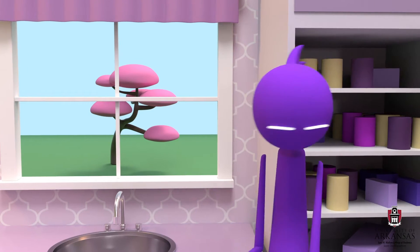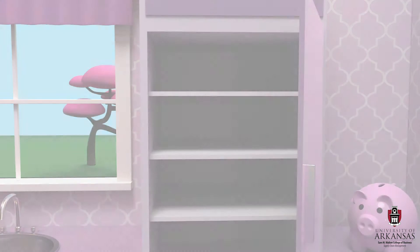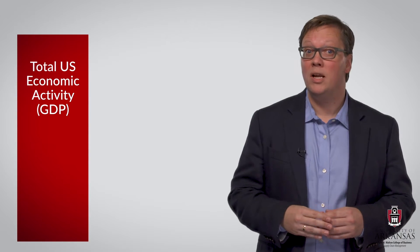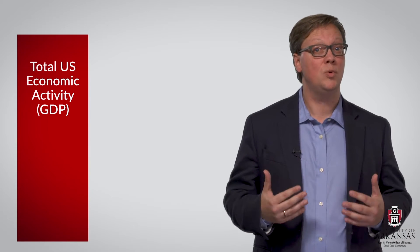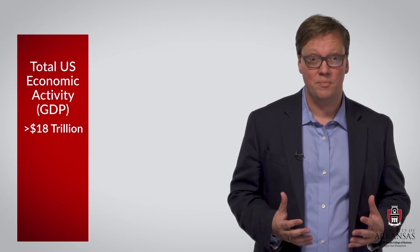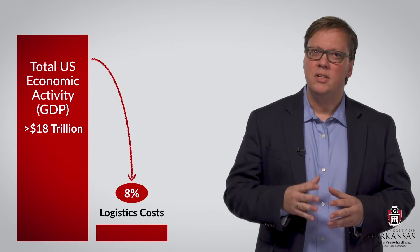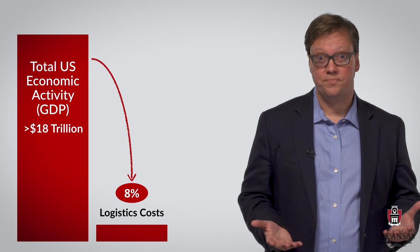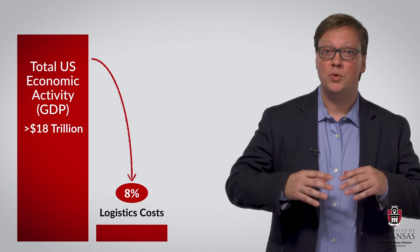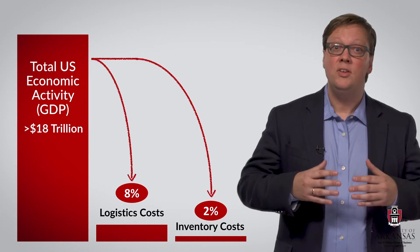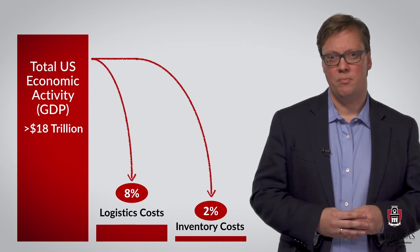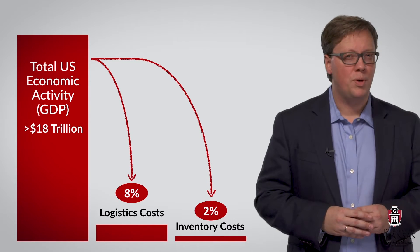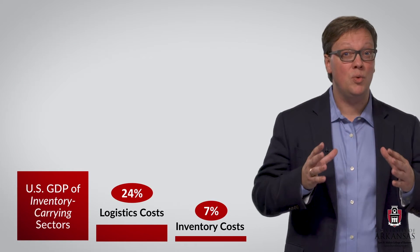In other words, our economy would come to a standstill. To illustrate the scale, let's imagine that this bar represents the total economic activity in the US measured in US dollars — a gross domestic product of over 18 trillion dollars. Eight percent of this amount is spent on transporting and storing inventories — what we call logistics costs. About one-fourth of that, so two percent of the total economic output in the US, is consumed by inventory costs.